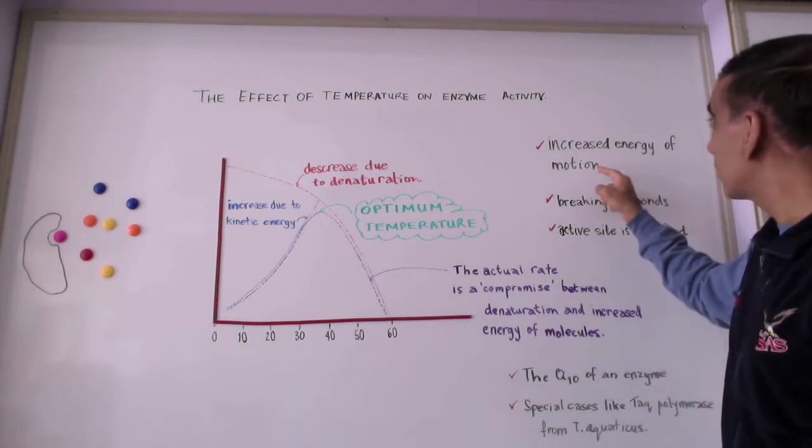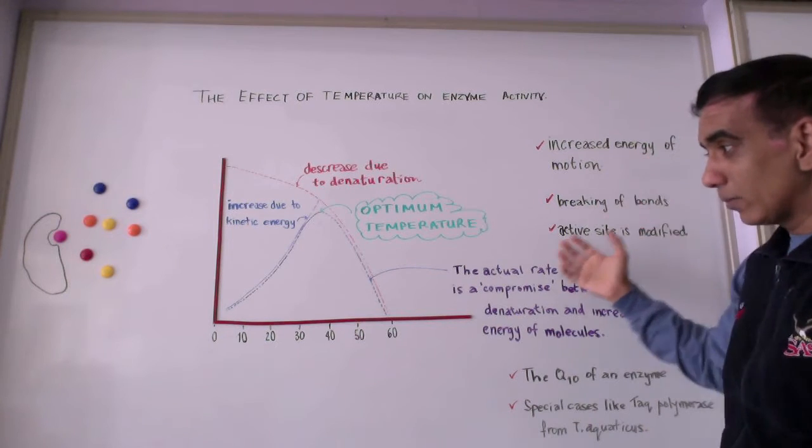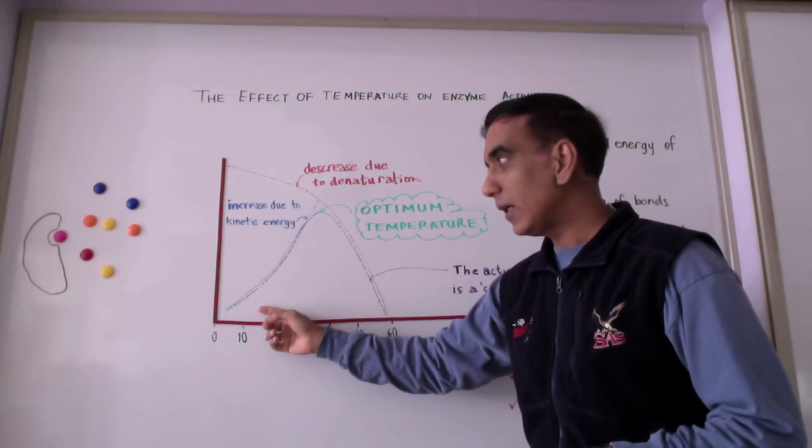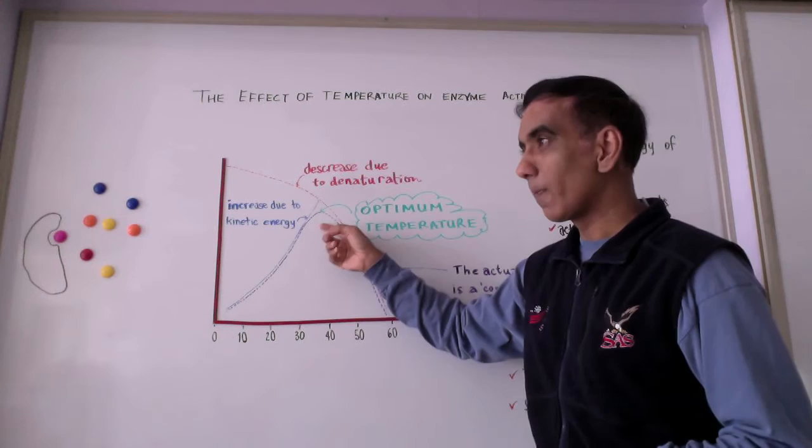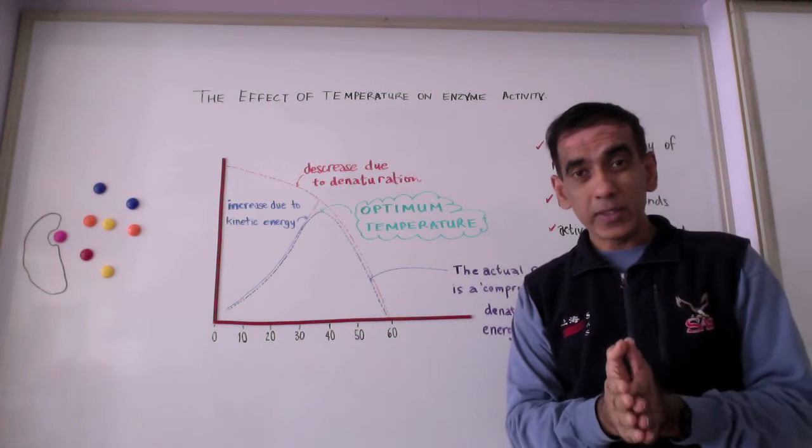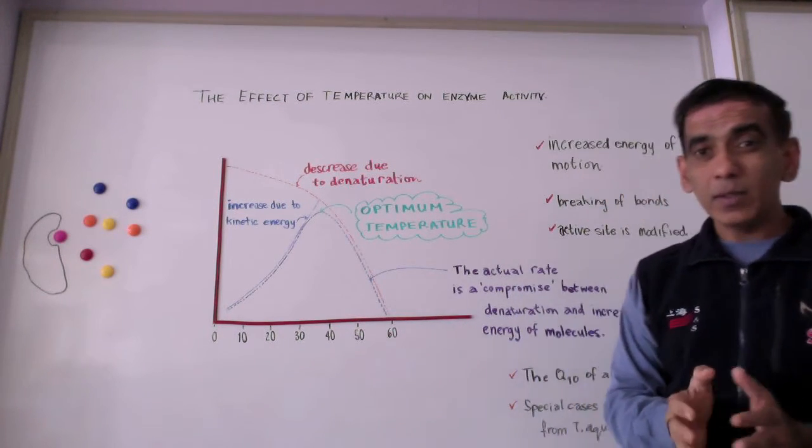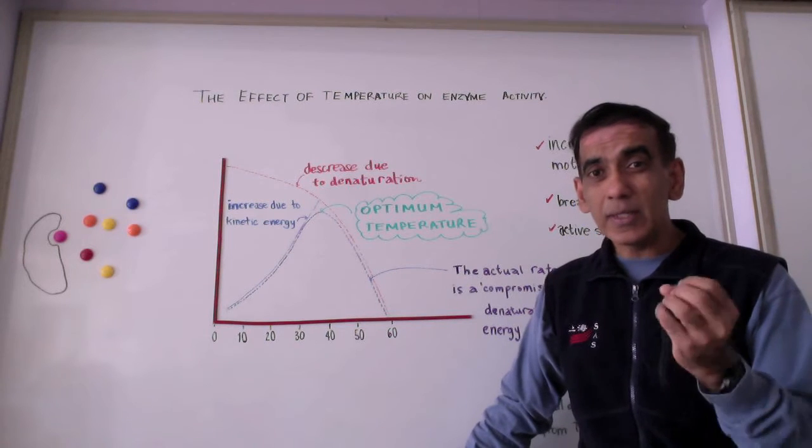So an increase in molecular motion brought about by an increase in temperature is one way to increase the rate of a reaction. But because enzymes are unique molecules, they are globular proteins assembled from a range of amino acids.